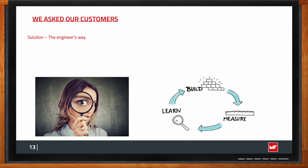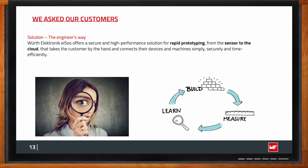The engineering way of approaching any problem is prototyping — you build a model, a prototype, something tangible to actually start testing the solution. What Würth Elektronik offers is a secure, high-performance solution for rapid prototyping from sensor to cloud, taking the customer by hand and connecting devices and machines in a very secure and time-efficient way — so you can have a stream of data onto the cloud platform within a few hours, start measuring, get new insights, and then go ahead with the end solution. Rapid prototyping is the proposal for such complex applications.